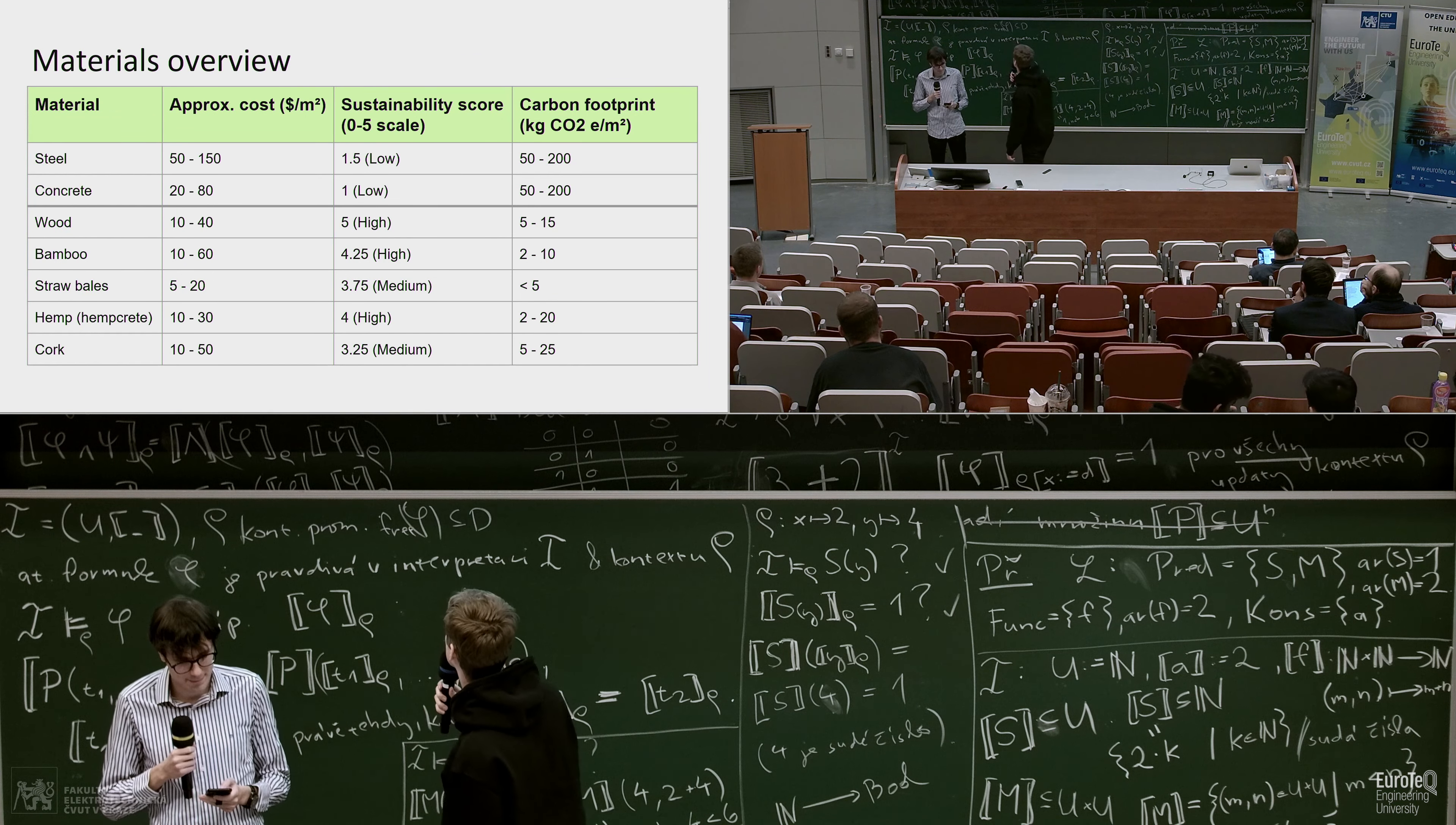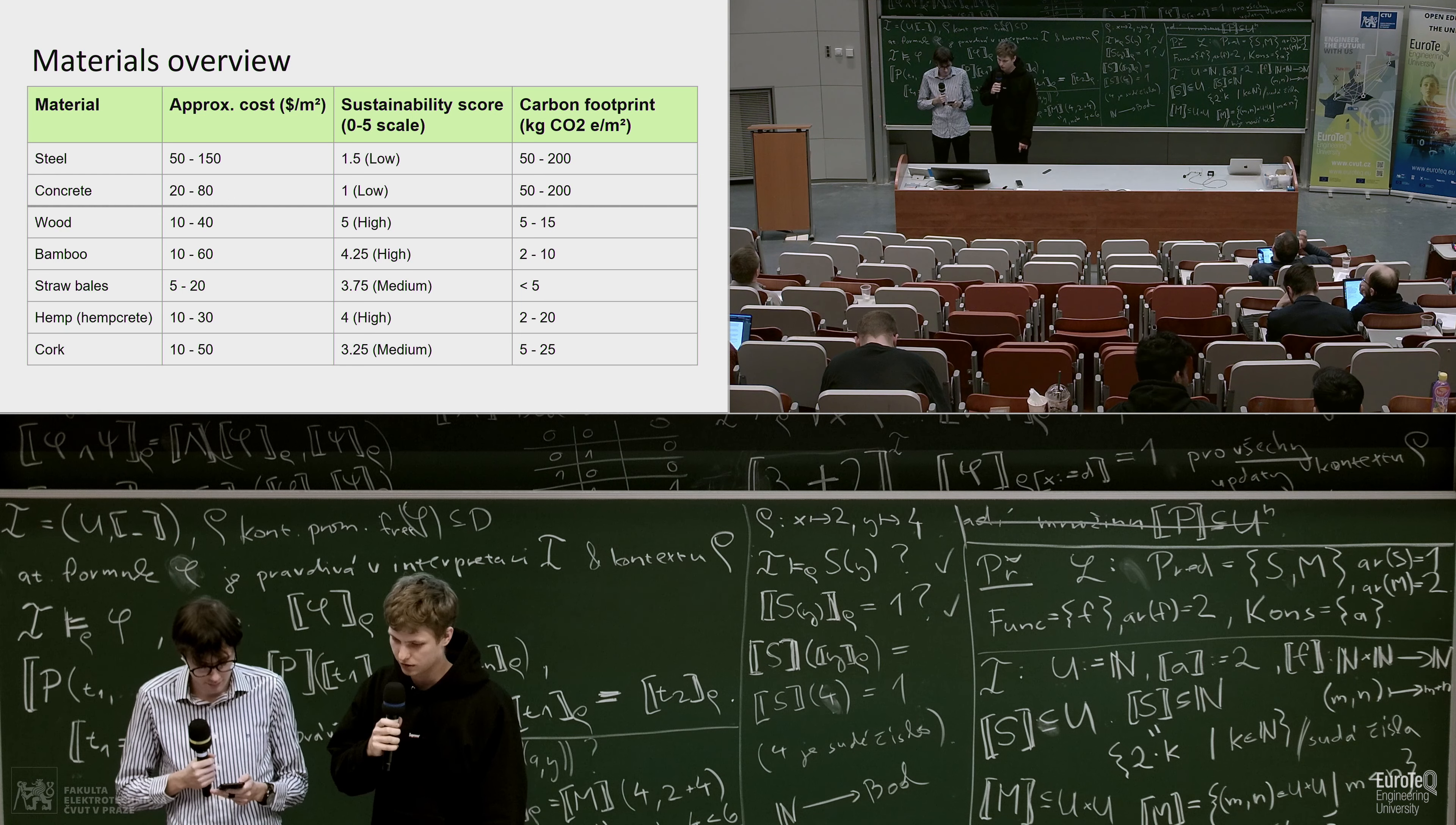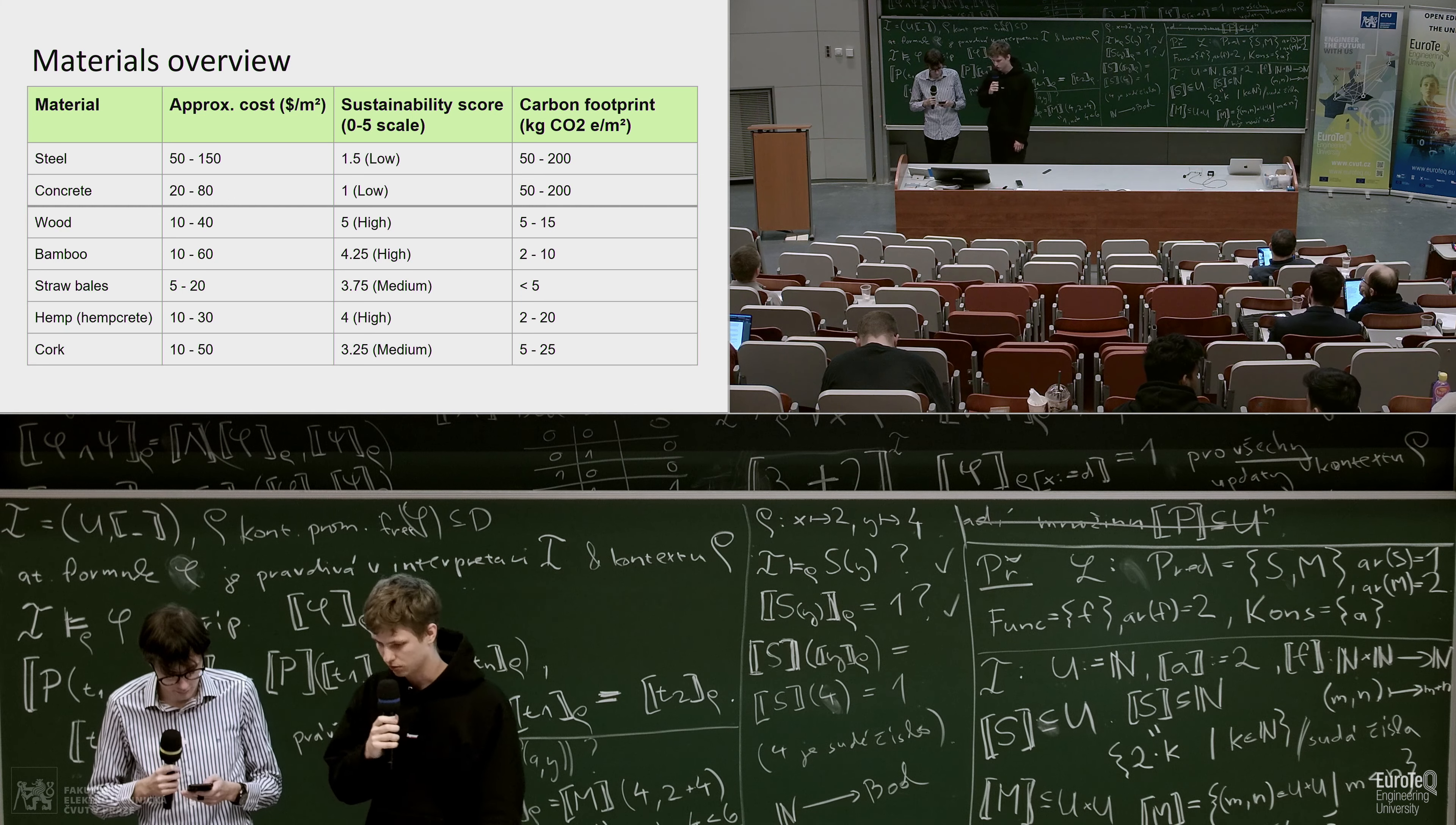The next table illustrates seven different materials. The first two are conventional materials, steel and concrete. We can observe that they are pretty expensive if you compare them to renewable materials, and they aren't really sustainable. They have high carbon footprint. In contrast, renewable resources are cheaper, much more sustainable, and they have a pretty low carbon footprint.